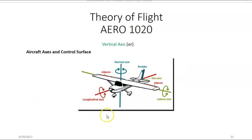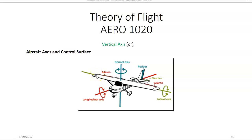Here's another illustration of the three axes of movement of an aircraft. The longitudinal axis runs from the nose back to the tail. The lateral axis runs from wingtip to wingtip. The vertical axis, also known as the normal axis, is a straight line through the center of the aircraft. Movement around the longitudinal axis is known as roll, around the lateral axis is known as pitch, and around the vertical axis is known as yaw.